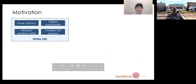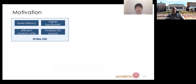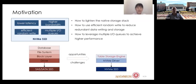NVMe SSD has four characteristics: lower latency, higher bandwidth, efficient random write, and multiple IOQs. These new features, different from traditional HDDs and SSDs, have brought new opportunities for storage system design. At the same time, challenges arise: how to lighten the native storage stack, how to use efficient random write to reduce redundant data writing, and how to leverage multiple IOQs to achieve higher performance.